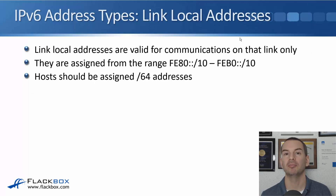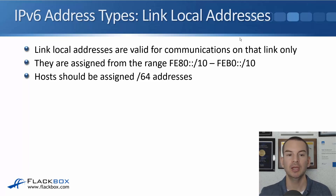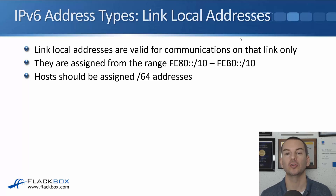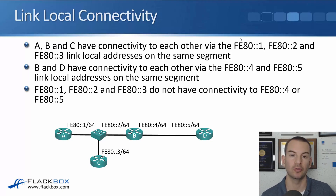There's more to tell you about Link Local addresses. Link Local addresses are valid for communications on their particular link only — they cannot send traffic out to another link. They're assigned from the range FE80::/10. Hosts should be assigned /64 addresses. Let's look at what we mean by Link Local and not being able to send traffic off their own link.